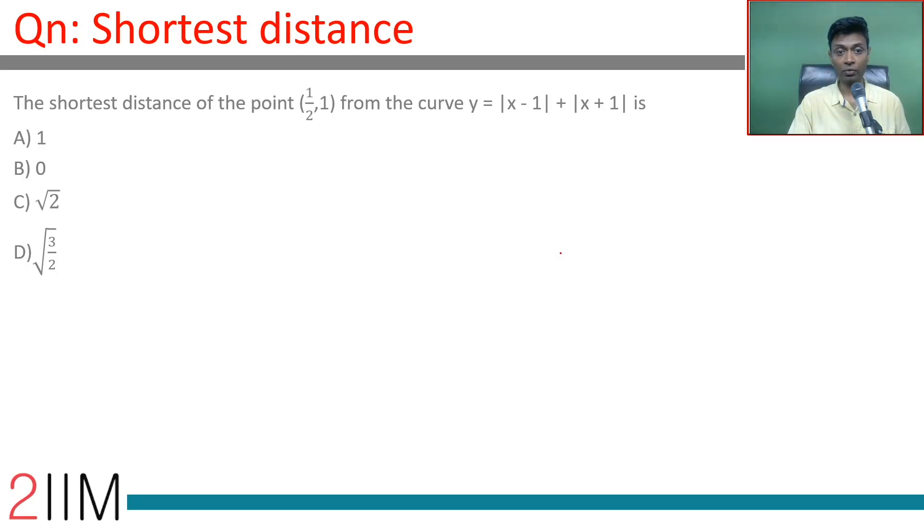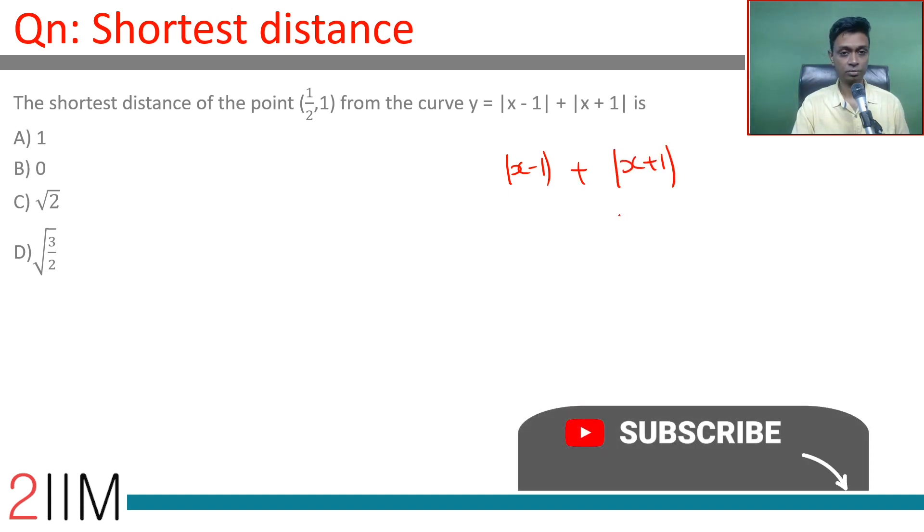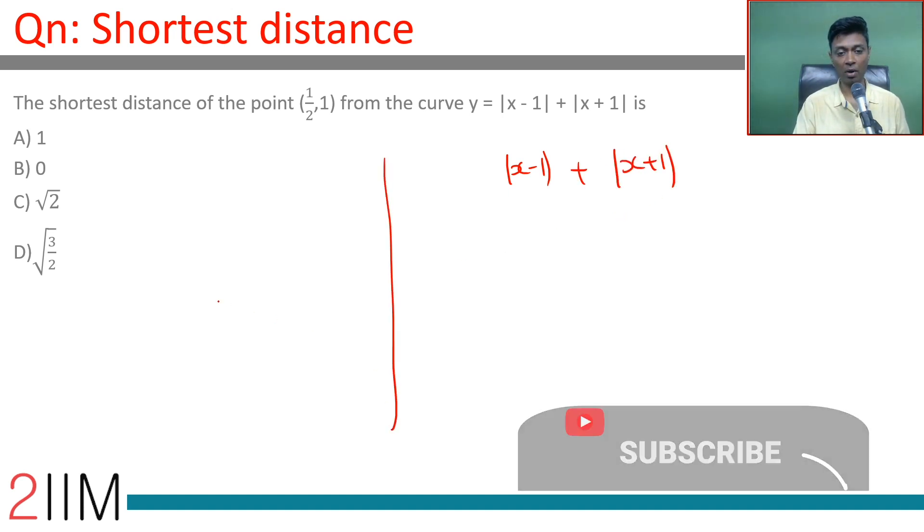The shortest distance of the point (1/2, 1) from the curve y = |x - 1| + |x + 1| is... Think about the point (1/2, 1).